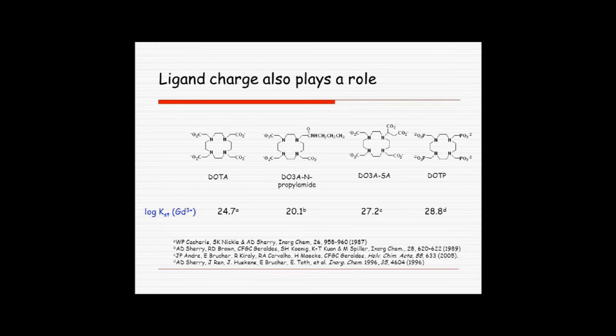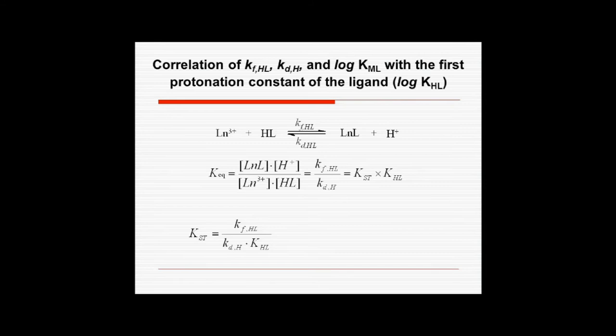Okay, so the ligand also plays a role. So here's an example of stability constants. Here's DOTA with gadolinium, 24.7. If you make a monoamide of DOTA and reduce the charge a bit, you can see it drops off by four orders of magnitude, which is really quite a lot. If you put charge back into the system with something like this side chain where you have excess charge now, the stability gets even larger. And then if you go to a really negatively charged system such as DOTP, the stability is larger still. So clearly the charge on the ligand plays a role in determining the stability of the resulting complexes.